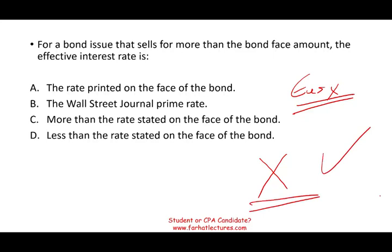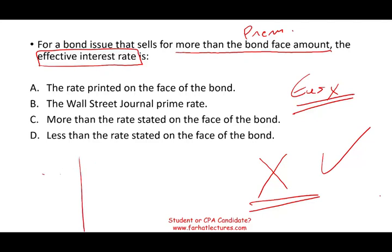So let's take a look at the question: for a bond issue that sells for more than the bond face amount — which means this bond is selling at a premium — the effective interest rate is what? You need to know that a bond could sell at a premium, discount, or par. You need to know under what circumstances the bond sells at a premium, discount, or par. Here are the rules, and you have to know the rules.